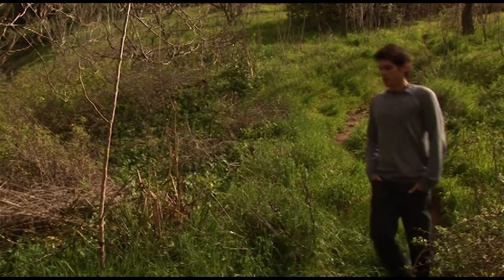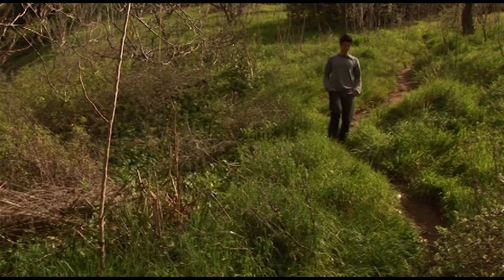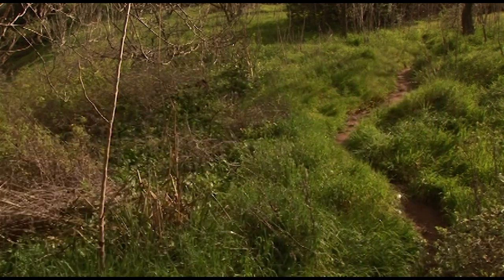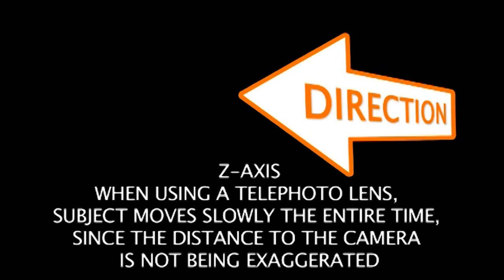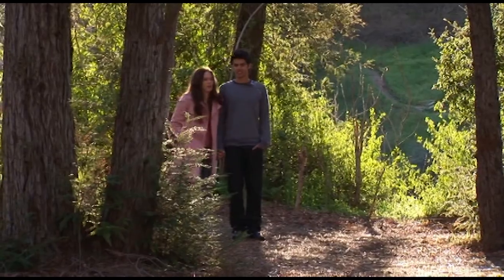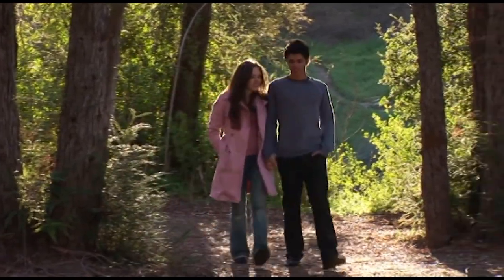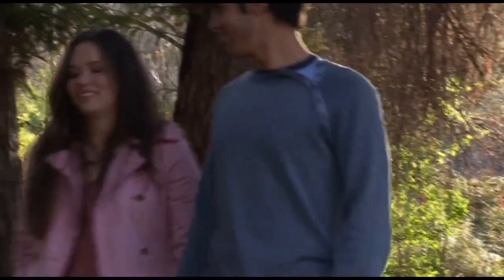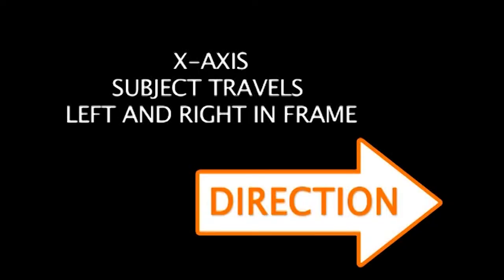Watch him coming back: it feels like it takes forever until he gets close to the camera, and then he moves really fast. Telephoto lenses do the exact opposite. When using a telephoto lens, the subject moves very slowly the entire time since the distance to the camera is not being exaggerated. The camera is so far away from the subject that the distance the subject is traveling is negligible compared to how far away the camera is. Being far away from a performer moving towards you makes it look like they're just taking forever to get to you, very slowly coming closer and closer.